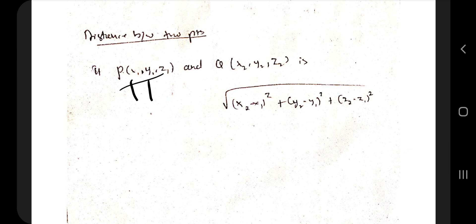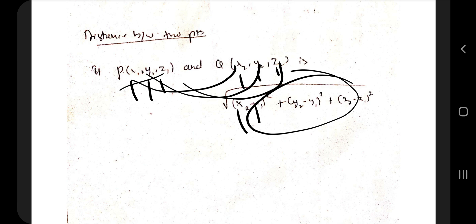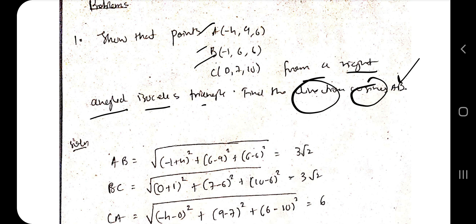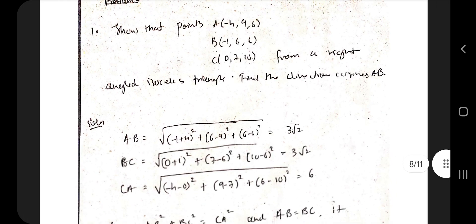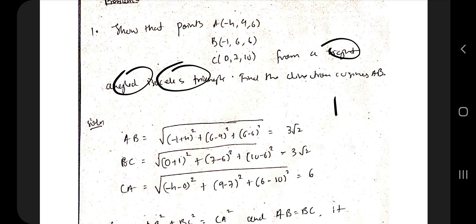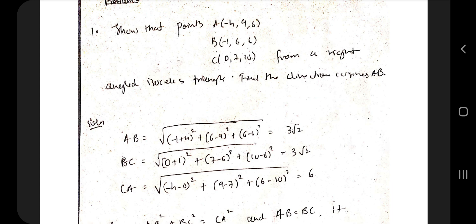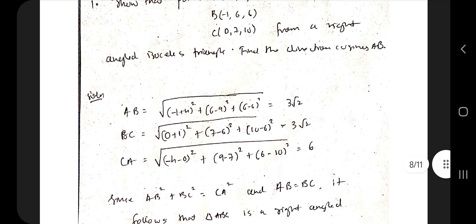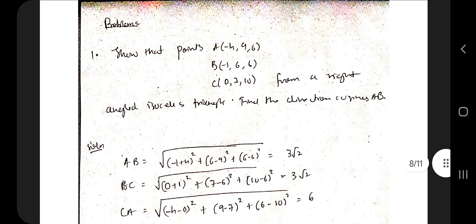The distance between two points (x₁,y₁,z₁) and (x₂,y₂,z₂) is √[(x₂−x₁)² + (y₂−y₁)² + (z₂−z₁)²]. Given points A, B, and C, to prove it is a right-angle isosceles triangle, first apply the Pythagorean theorem: a² + b² = c². Calculate the distances AB, BC, and CA. If AB = BC = 3√2 and CA = 6, then 18 + 18 = 36, confirming a right angle. Since two sides are equal, it is also isosceles.